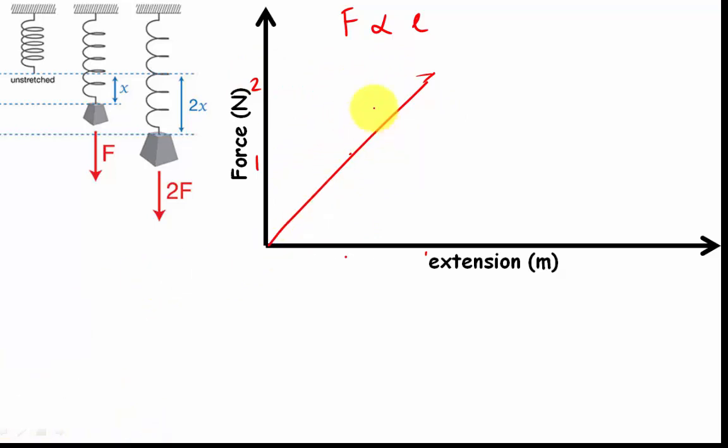You should also be familiar with the fact that a gradient like this would represent a spring which is stiffer. So now we have to start thinking about that constant that comes in. So let's think about if force is proportional to extension, we can also write this as an equal sign if we put a constant in there.